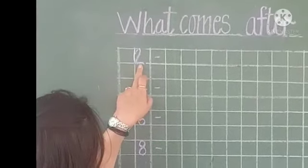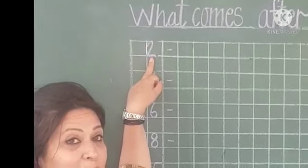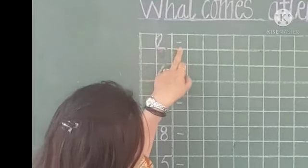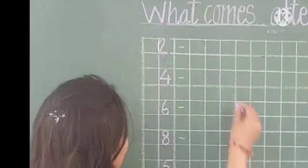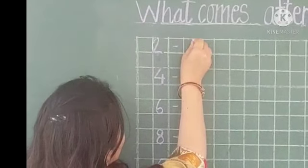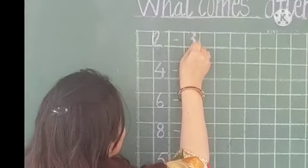See children, which number is this? This is number 2. And what comes after 2? Yes, you are right. We will write number 3 here.